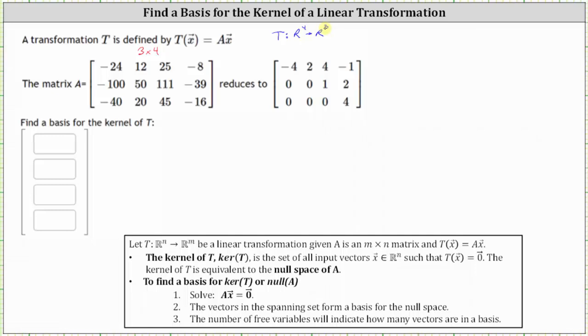We're asked to find a basis for the kernel of the transformation T. The kernel of T is a set of all input vectors x in Rn such that T of vector x equals the zero vector. The kernel of T is equivalent to the null space of matrix A.